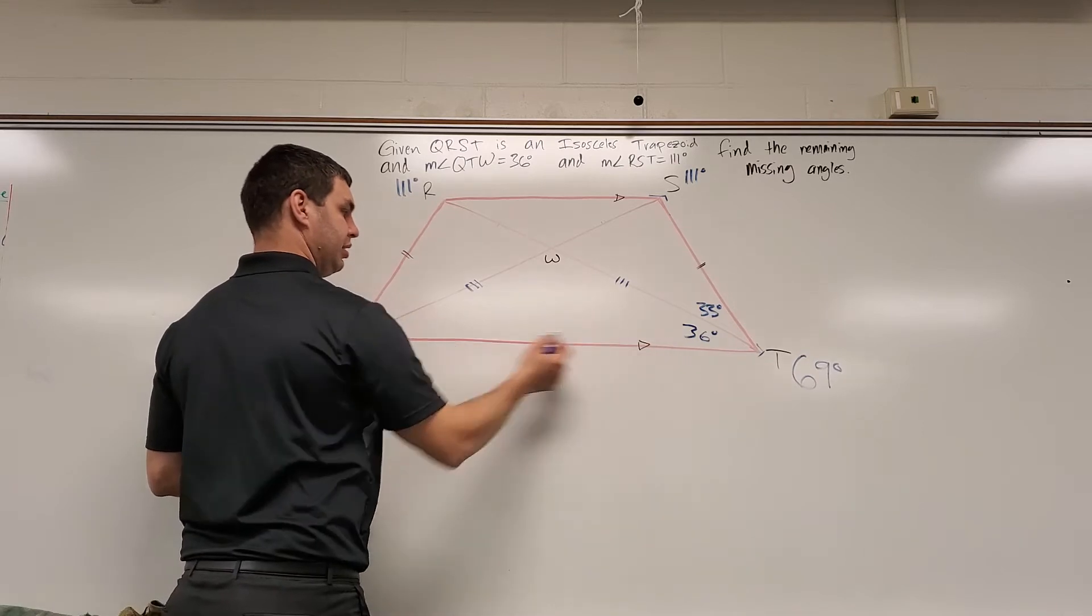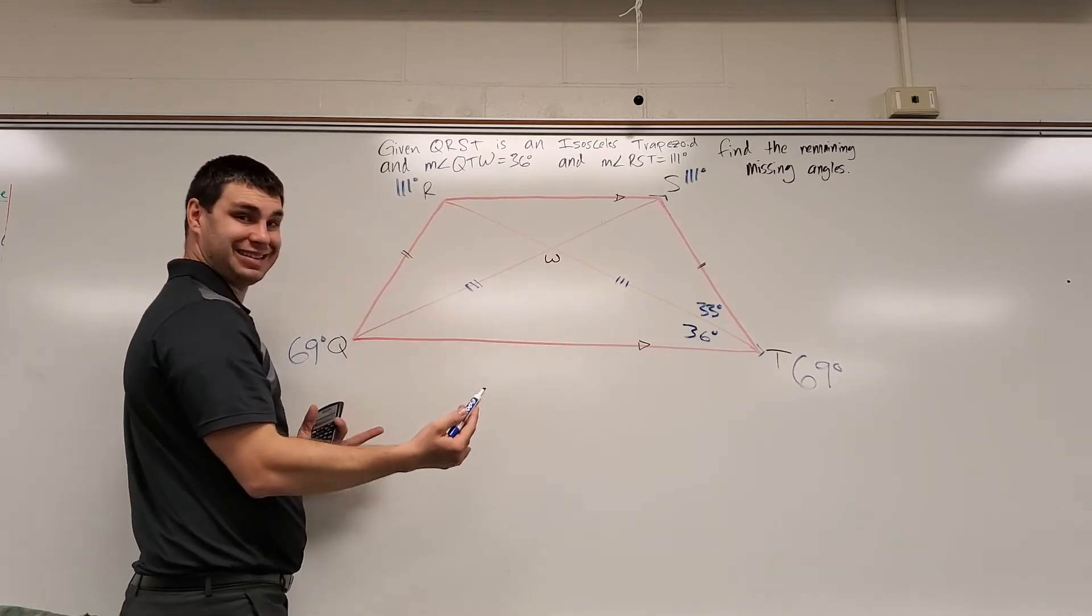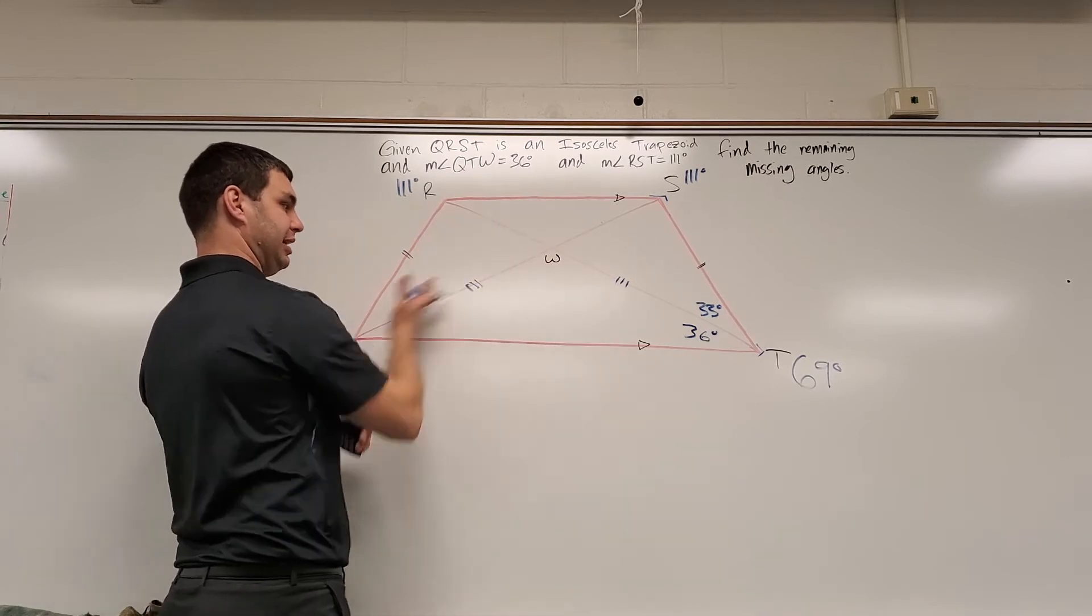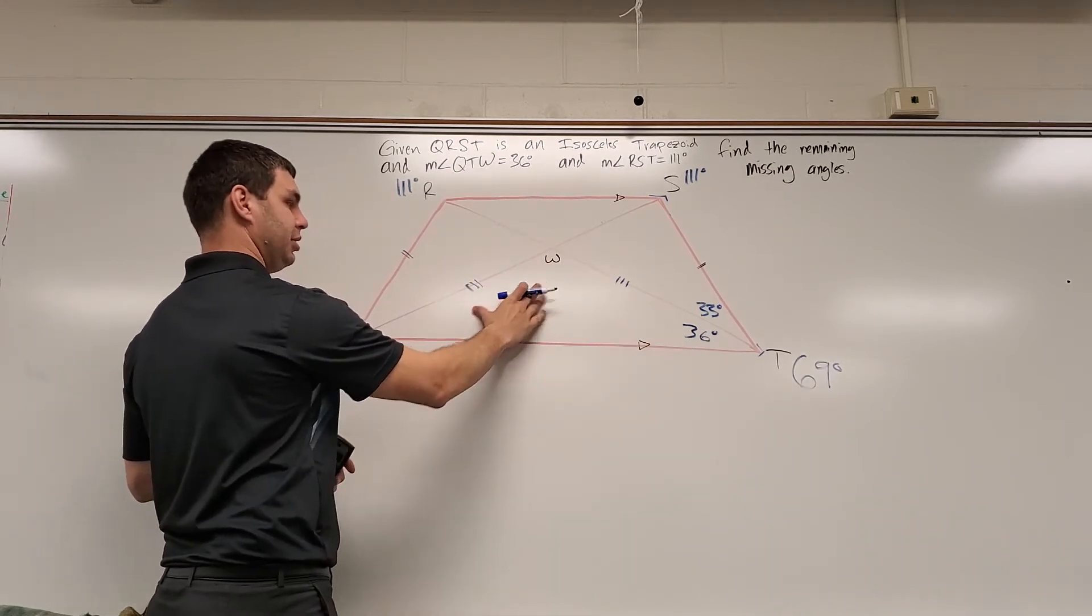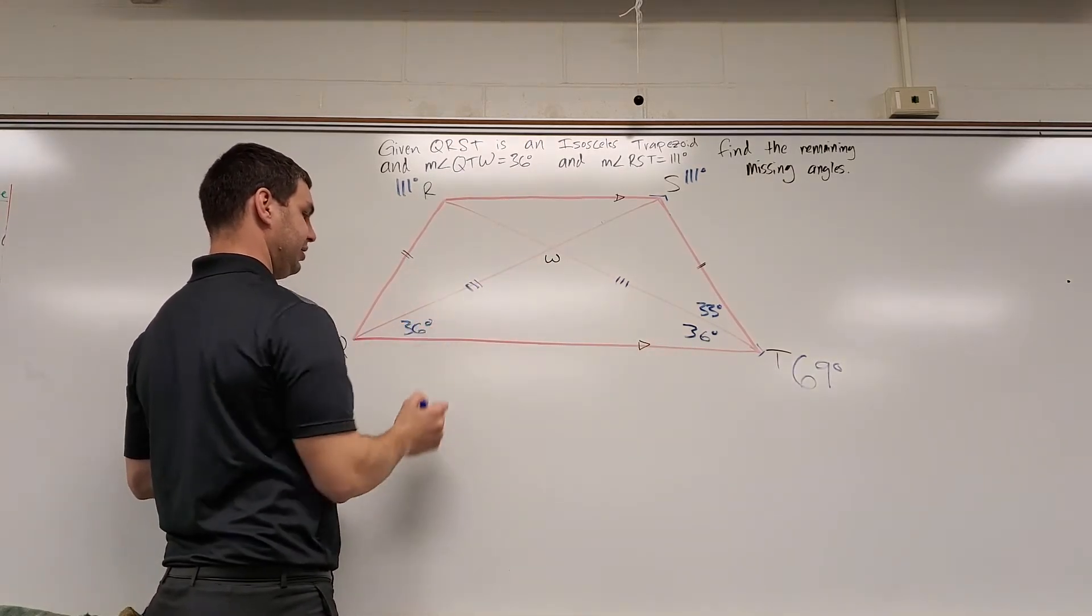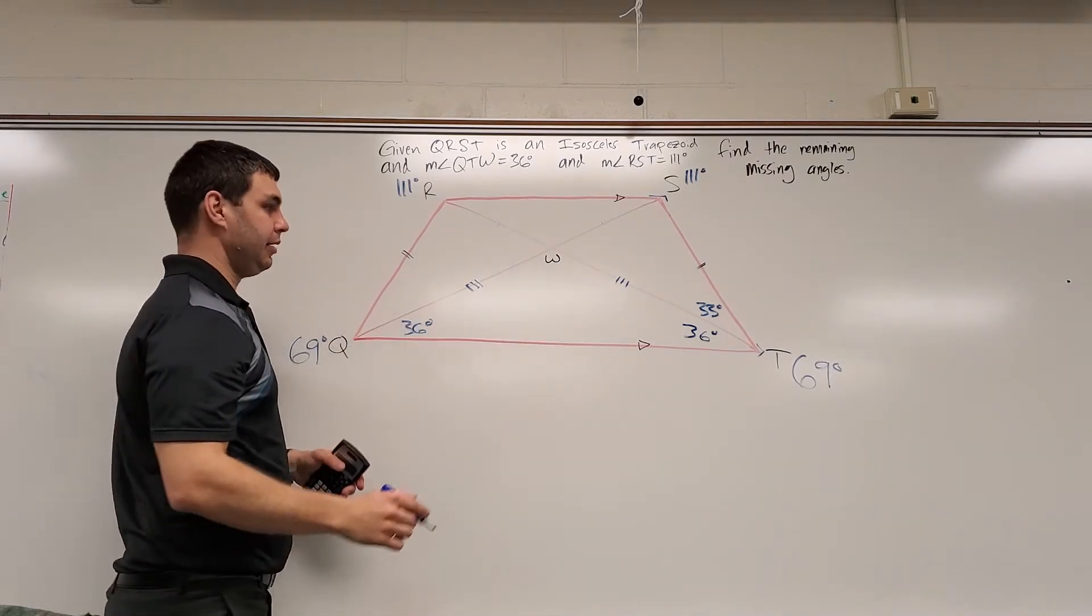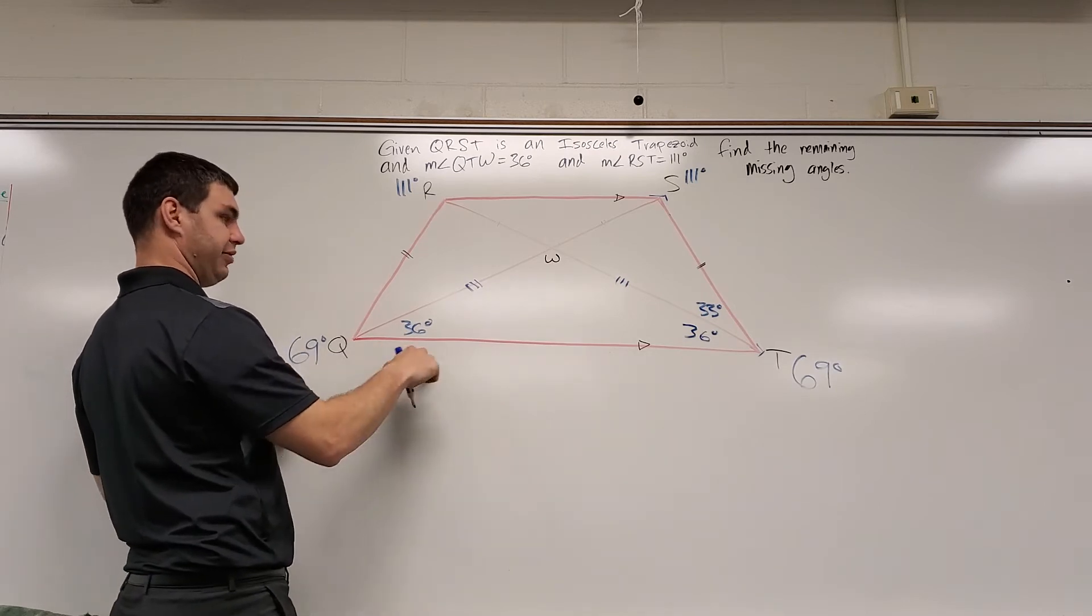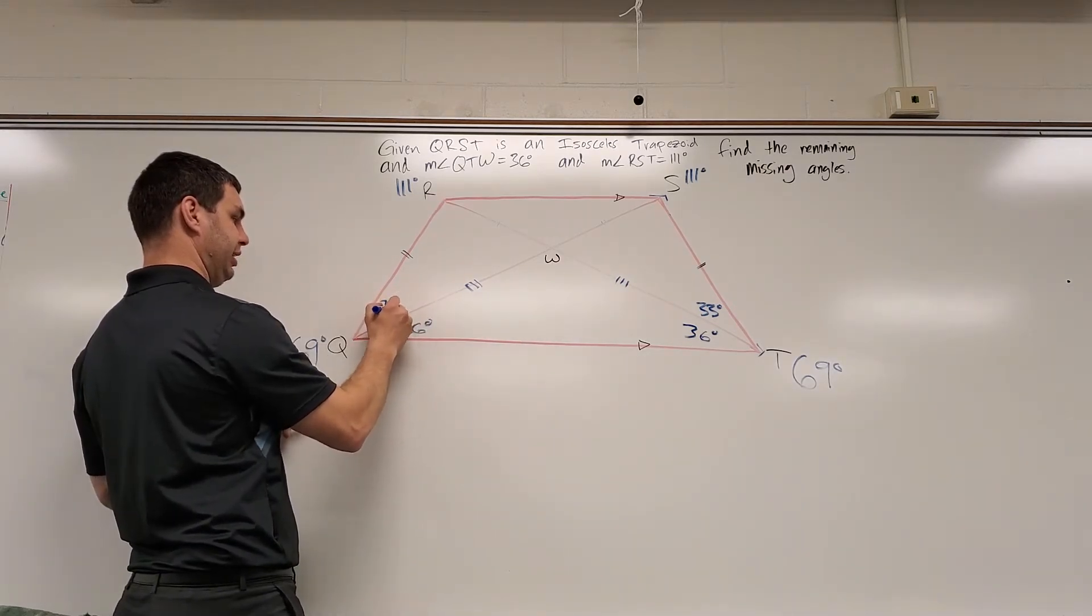But what I just did there, this bottom part now is an isosceles triangle. In this isosceles trapezoid, there's an isosceles triangle. Now look, this is 36 degrees because of that. I also know that, since this is made up of 69, for the same reason over there, this is 33 degrees.